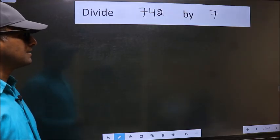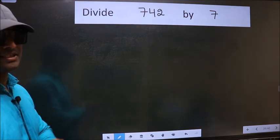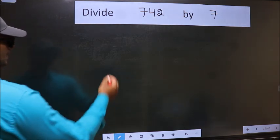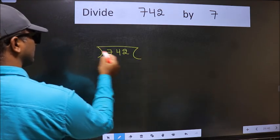Divide 742 by 7. To do this division, we should frame it in this way: 742 here and 7 here.